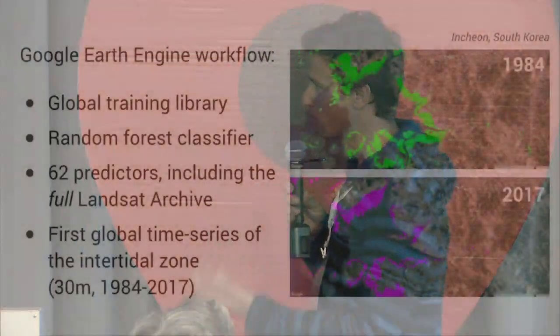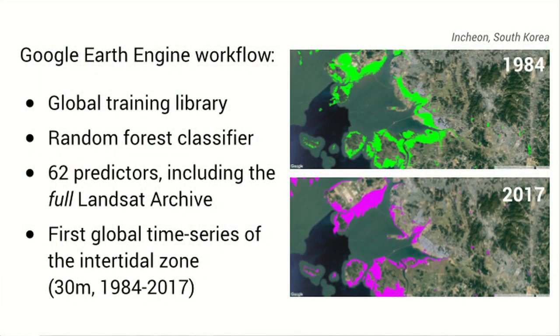We've developed a completely new way of doing this using Google Earth Engine. We're using all Landsat images in the full archive, we're using machine learning methods, and we've really completely changed the way we do this. Now we can automatically map the intertidal zone across the whole world.